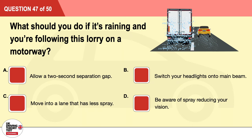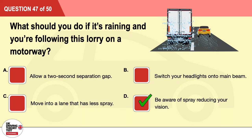Question 47: What should you do if it's raining and you're following this lorry on a motorway? A: Allow a two-second separation gap. B: Switch your headlights on to main beam. C: Move into a lane that has less spray. D: Be aware of spray reducing your vision. The correct answer is D: be aware of spray reducing your vision.